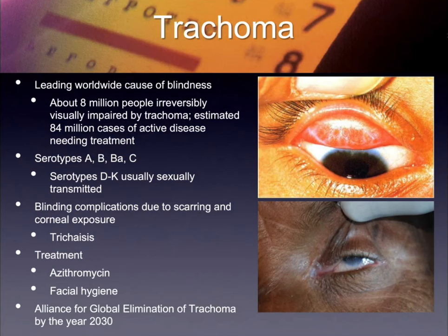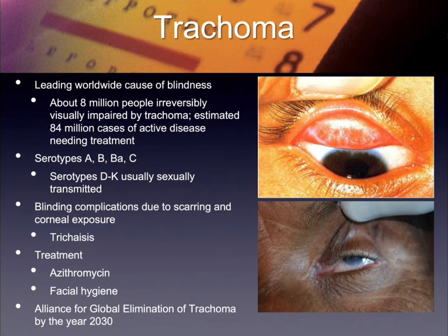Just to let you know: at least 8 million people are blind from trachoma and an estimated 84 million have active disease. The serotypes for trachoma are A, B, Ba, and C. D through K is sexually transmitted. Blinding complications are due to scarring and corneal exposure, especially with trichiasis — the lashes being broken off. Looking at the bottom picture it's hard to see any lashes at all. Treatment is azithromycin and facial hygiene — keeping hands away from eyes. It is still part of the global elimination trachoma initiative, now targeting the year 2030.